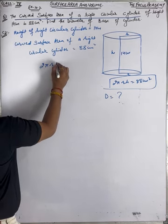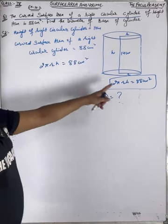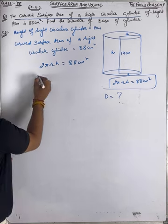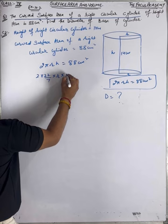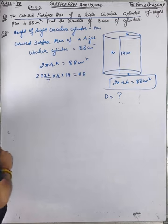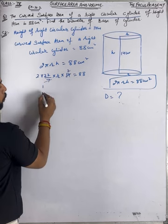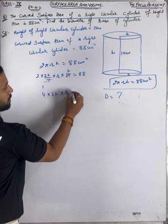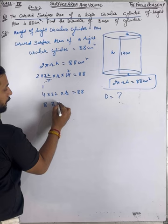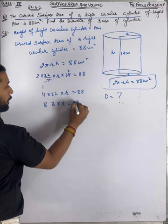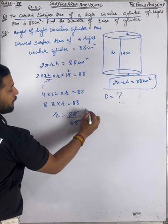With the help of curved surface area, we find the value of the radius. Curved surface area = 2πrh = 88. Two as it is, pi = 22/7, radius is not given, height = 14. Simplifying: (7/7) cancels, 2 × 2 × 22 × r = 88, giving 88r = 88. Therefore radius = 88 ÷ 88 = 1 cm.